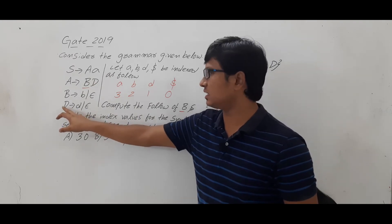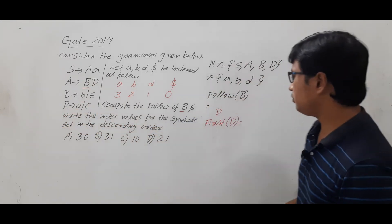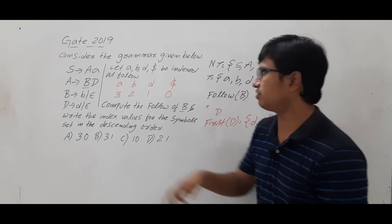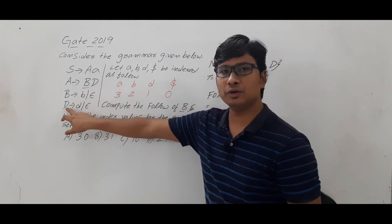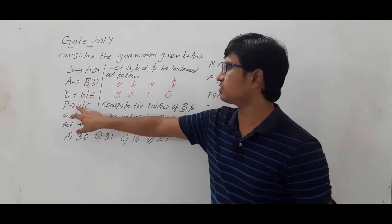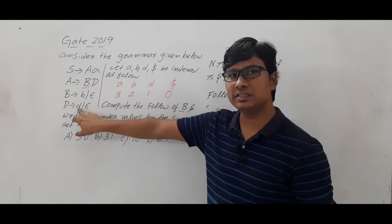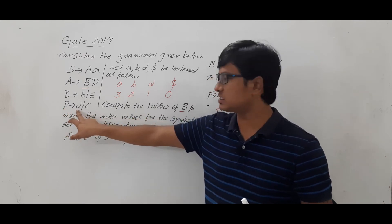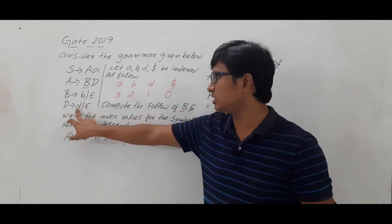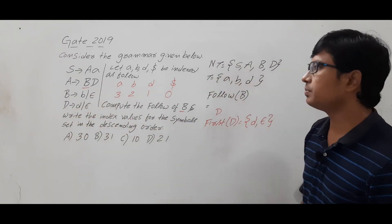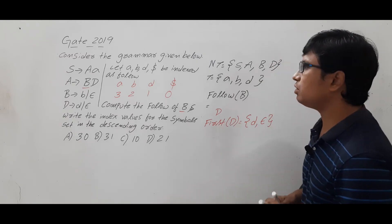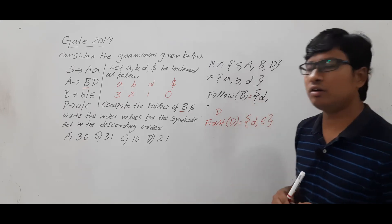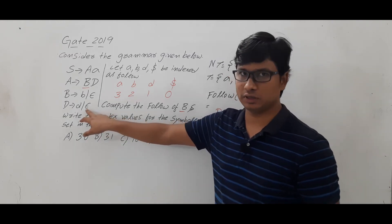To compute First(D), look at the production D → d | ε. Since small 'd' is a terminal, First of a terminal is the terminal itself. And since D also derives ε, First(D) = {d, ε}. Now, Follow of any non-terminal will not contain epsilon itself — epsilon is excluded from the Follow set.